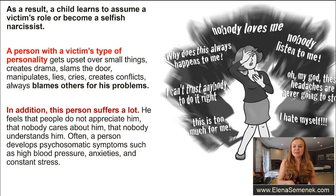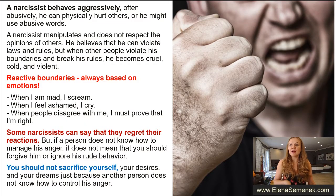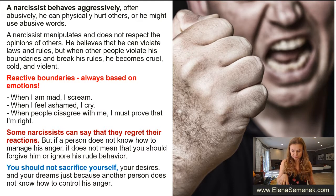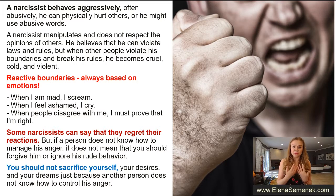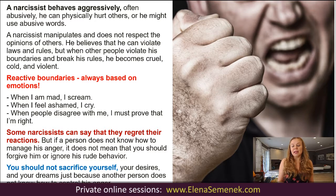Because he believes that people do not love him and people don't care about him. And the second type that we can get as a result of parents not teaching us how to create healthy boundaries is a person with a narcissistic personality. A narcissist behaves aggressively — a person who is not a victim, but the opposite. A narcissist is often abusive and can physically hurt others or use abusive words. A narcissist also manipulates and does not respect the opinion of others. He believes that he can violate laws, rules, and other people's boundaries.